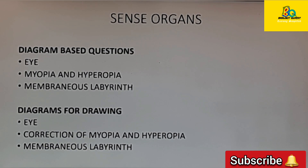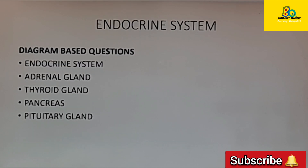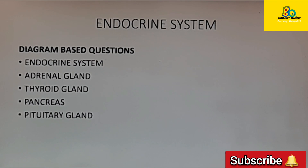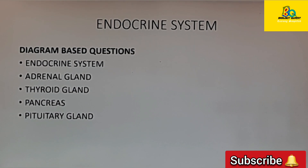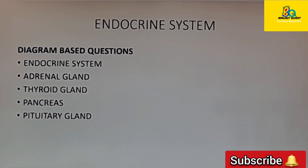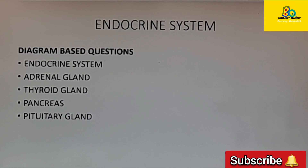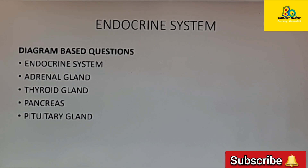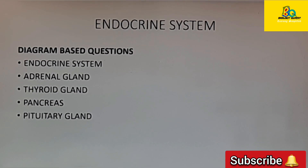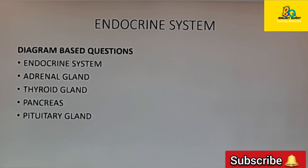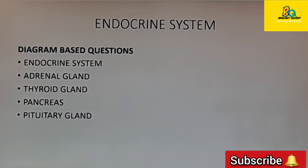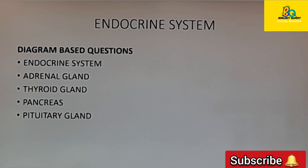Moving on to the last chapter, the endocrine system — from this chapter there are no diagrams for drawing, but you can expect diagram-based questions. There are four glands to study in standard 10: the adrenal gland, thyroid, pancreas, and pituitary. A diagram of a particular gland may be given and you may be asked to identify and answer questions based on it.